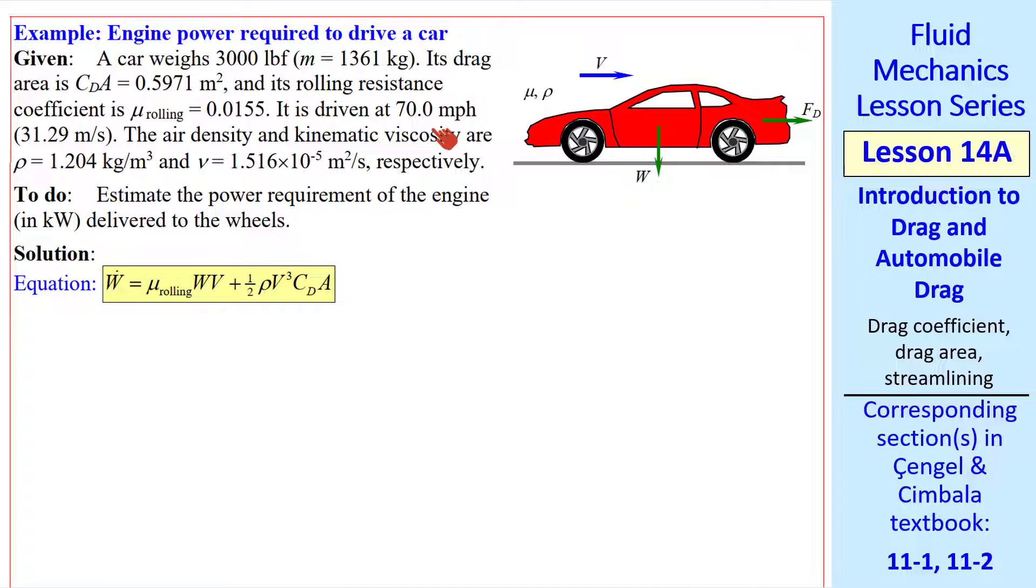Now I'll do a quick example problem. Here's a car with a given weight or mass, a given drag area, rolling resistance coefficient, and speed V. This is in air, of course. By the way, these numbers are based on a Honda Prelude that my son Luke used to drive. We want to estimate the power requirement of the engine in kilowatts delivered to the wheels.